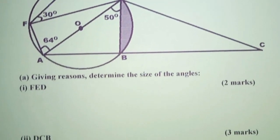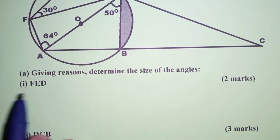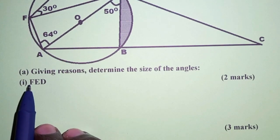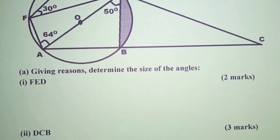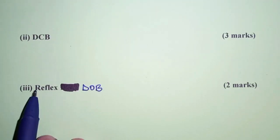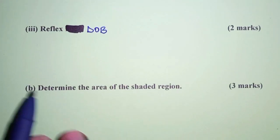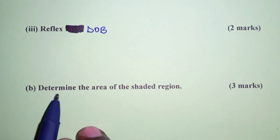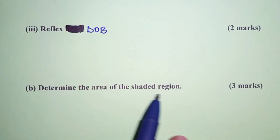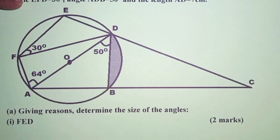Part A: giving reasons, determine the size of the angles — FED for part 1, DCB for part 2, and then part 3, the reflex angle DOB. And then finally, part B: determine the area of the shaded region.